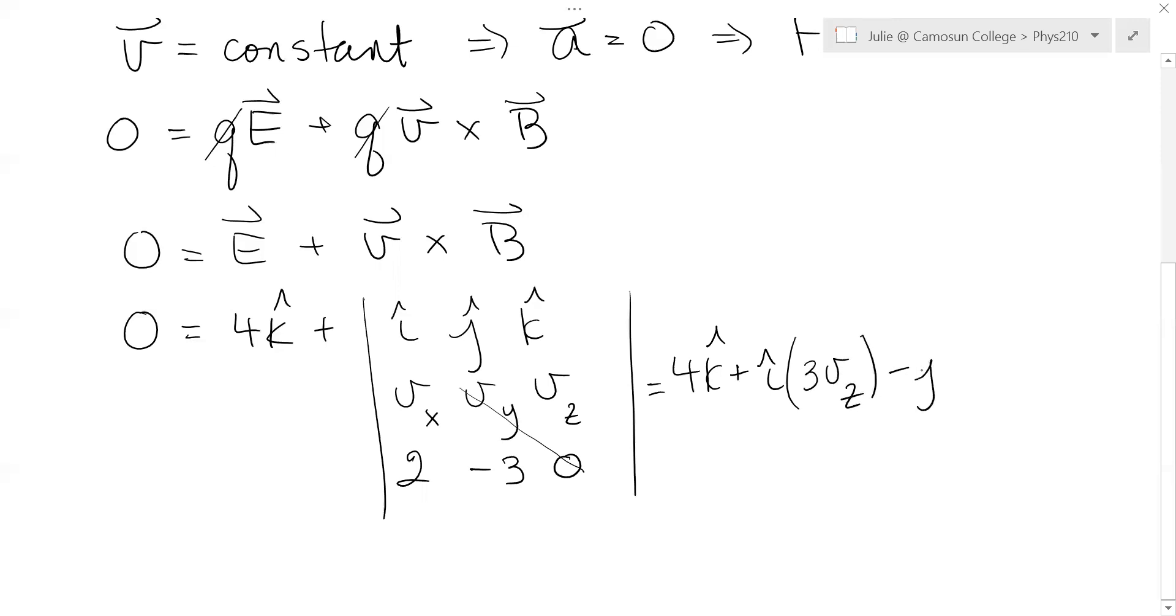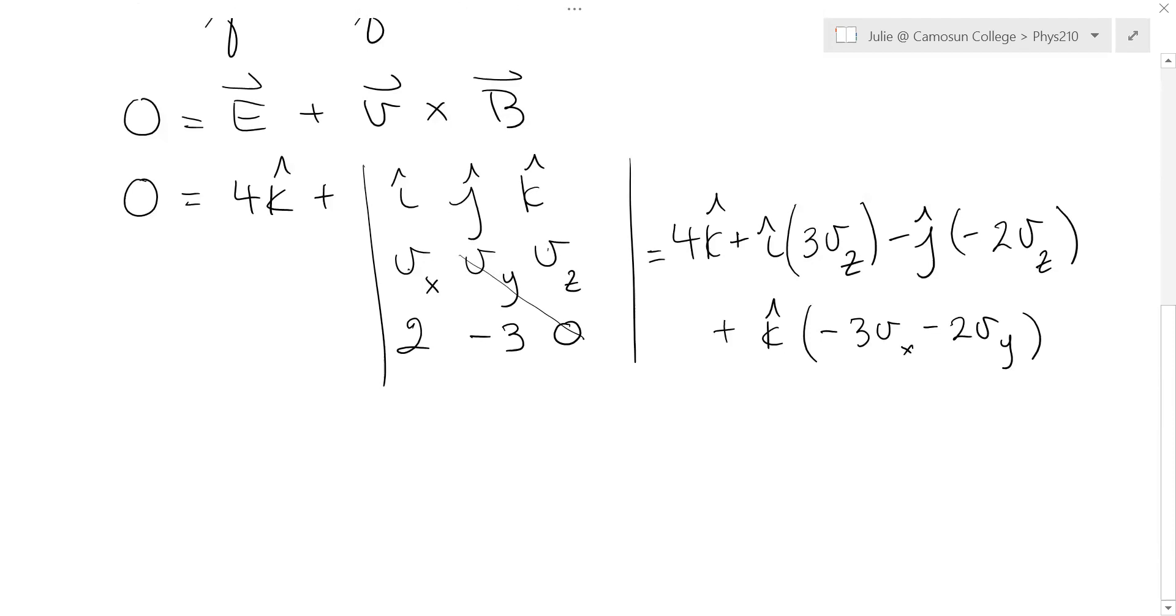And then the j hat component, that determinant would be negative 3 Vx minus 2 Vy. So let's have a look at that.